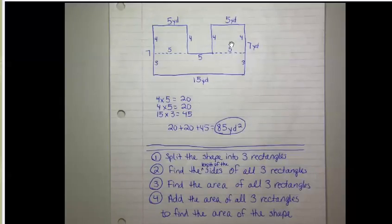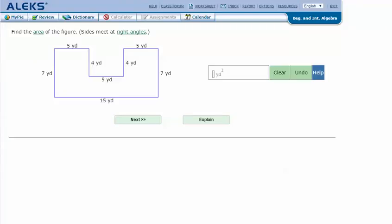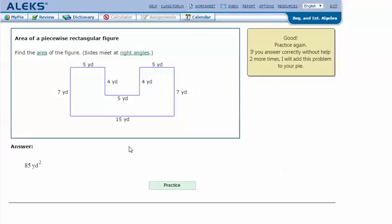And then we need to add the areas of all three rectangles. So 20 plus 20 plus 45 equals 85 yards squared. In my ALEKS screen, type in the answer that I got in my notes, 85, and click next. And it says that I got the correct answer.